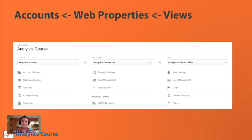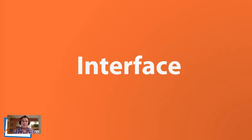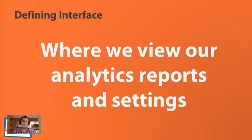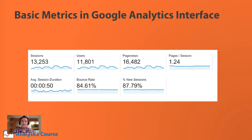Each account should be unique to your company. The interface is what we're talking about when we go into Google Analytics — when you go to google.com/analytics and log in and you're looking at your data and reports, you are in the Google Analytics interface. It's basically where you view your reports and your settings. When you log in, you're going to see things like sessions, users, page views, new sessions, and bounce rate.